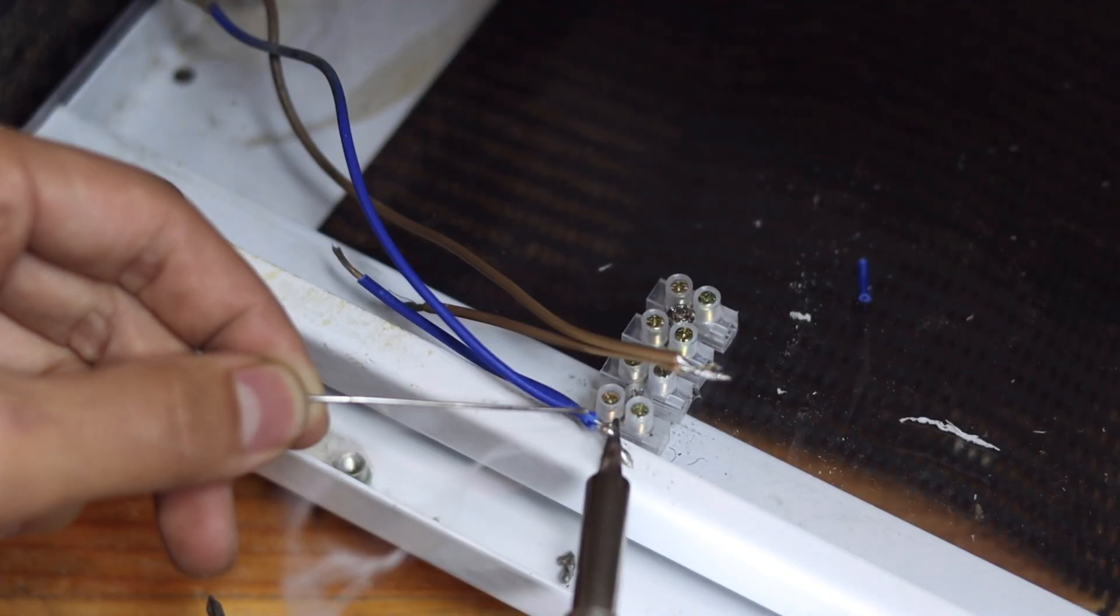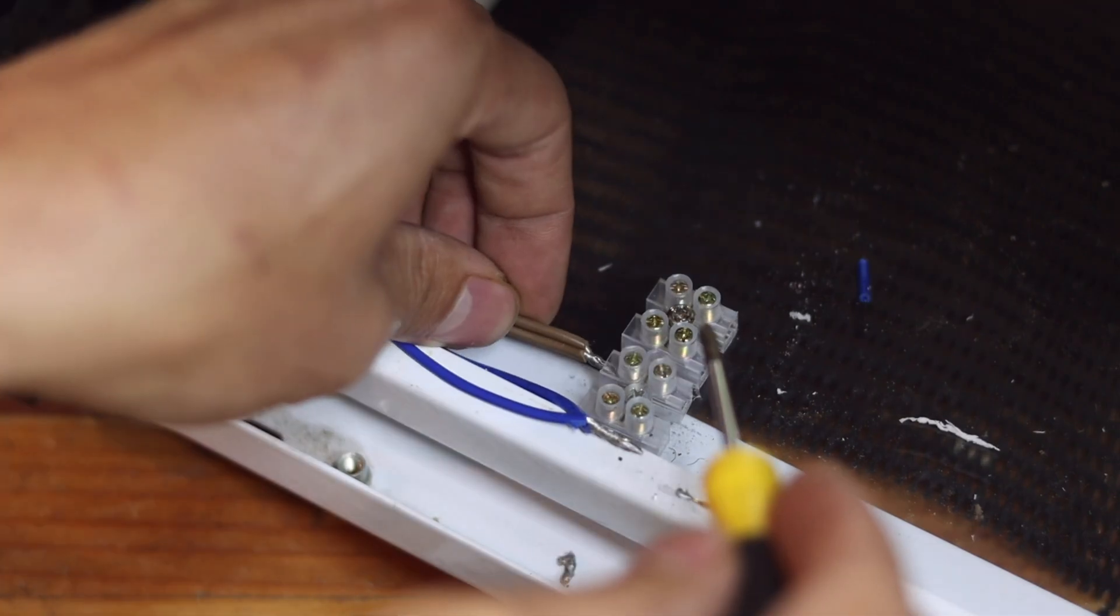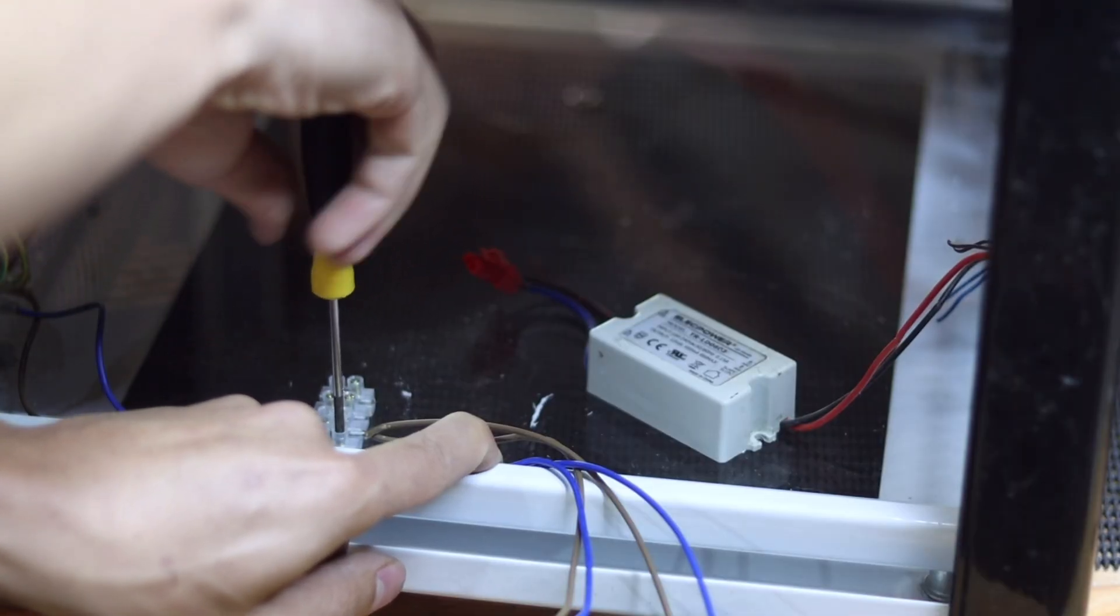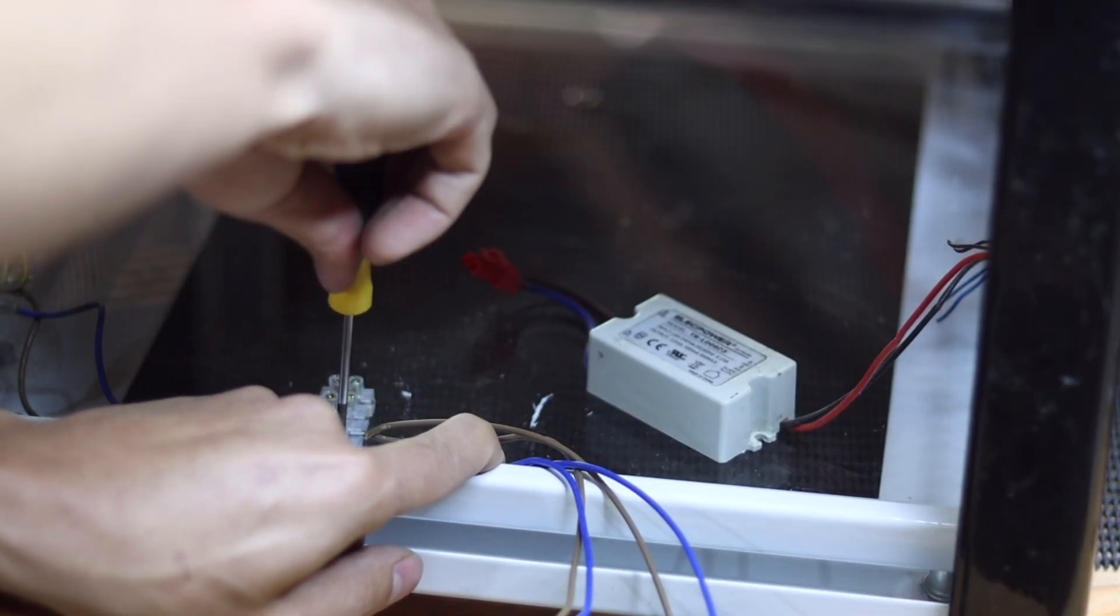The power cable coming into this incubator was then split in order to supply the various parts of this incubator, including the heating element, fan, thermostat, and LED lights.